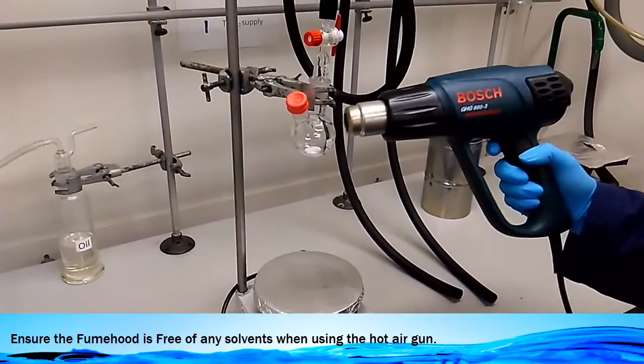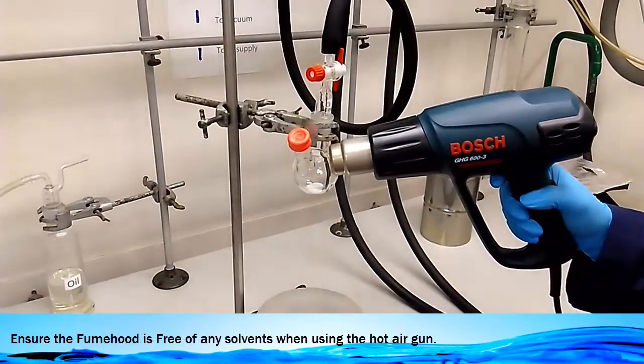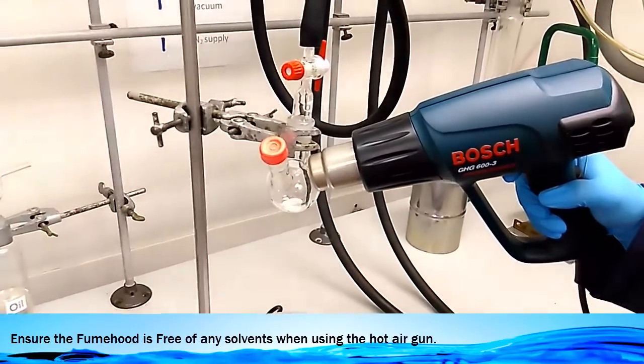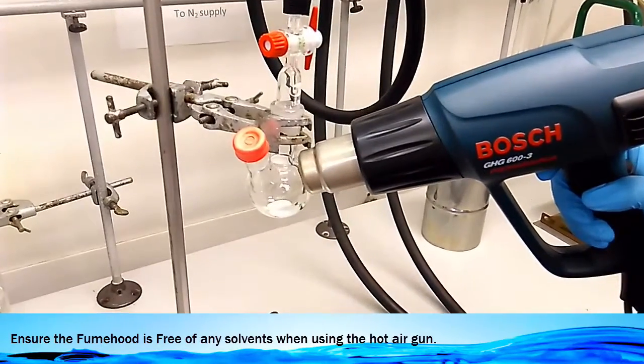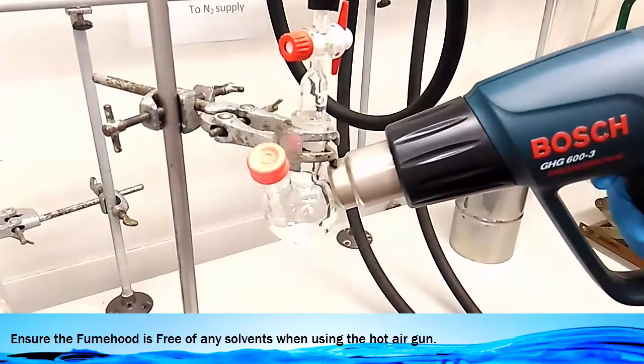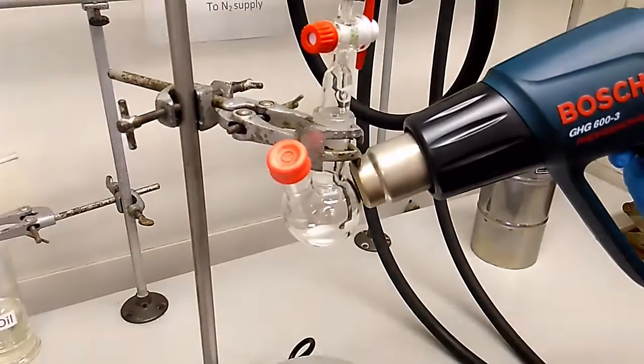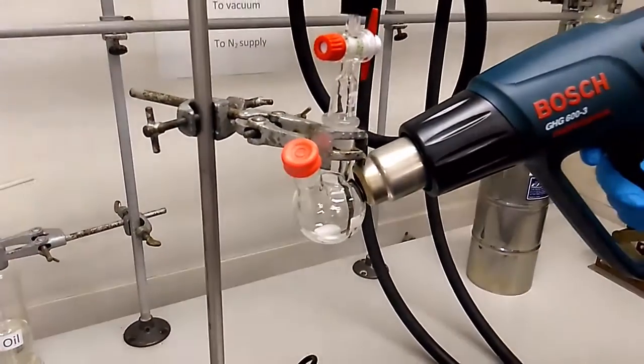Make sure that the fume hood is empty before you can do any heating. Especially there should be no solvents inside the same fume hood. Slowly aim the barrel of the gun to the base of the RBF to the side and you point to the same side for some time.